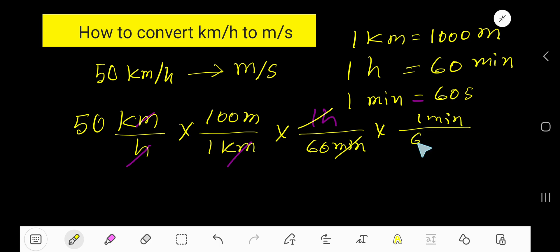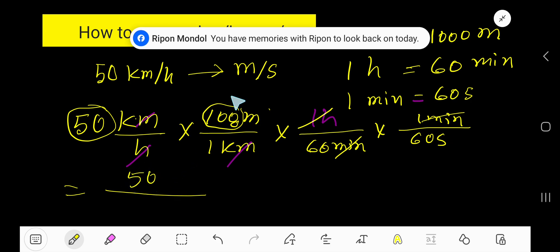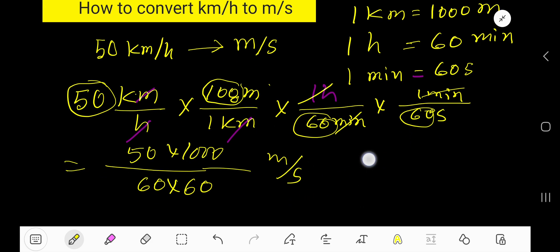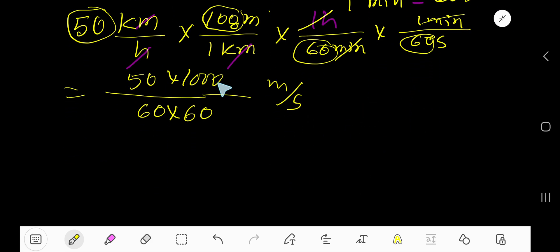Now multiply top number and bottom number. Here we have 50, then 1000. Here not 100, here 1000, right. So 50 times 1000 divided by 60, 60 times 60. And here we have unit meter and here second.